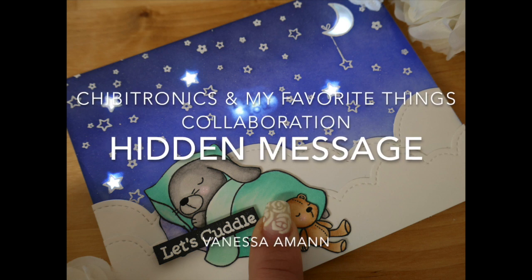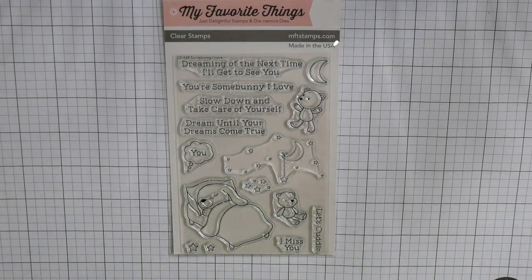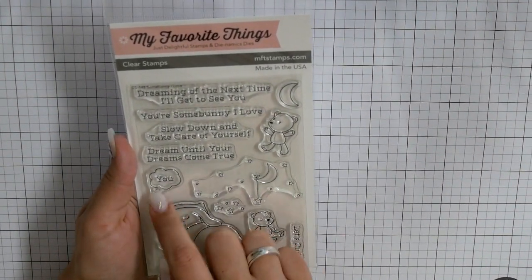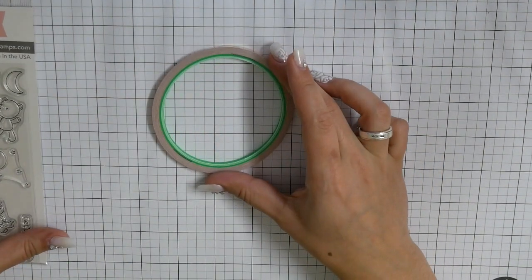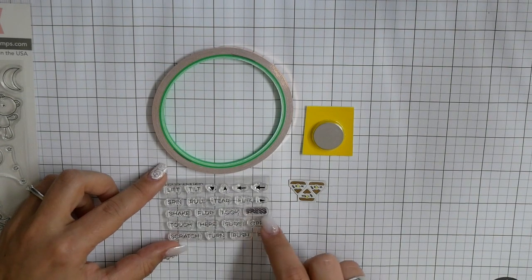Hello friends! Today is a very special day because Chibitronics and My Favorite Things are meeting for collaboration. This time I want to show you how to create a light-up card using the Snuggle Bunny stamp set.